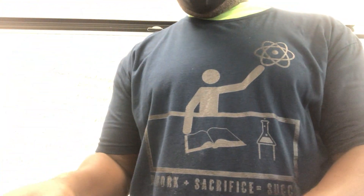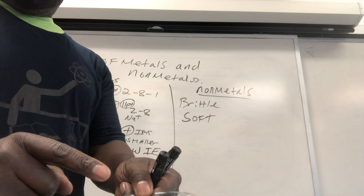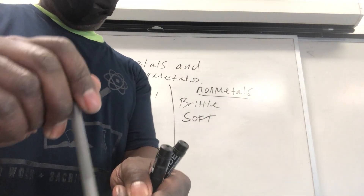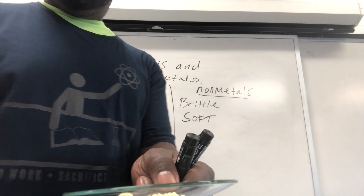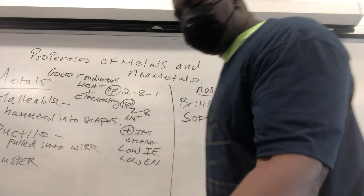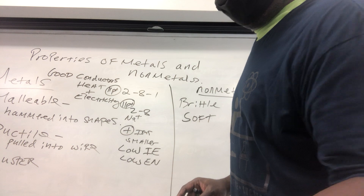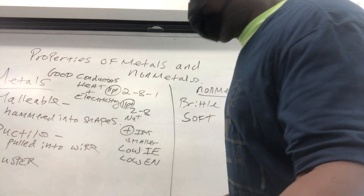I've got some sulfur here. This sulfur — if I take a pen and just poke it, it just crumbles, it just cracks up. So it's soft and powdery — a lot of non-metals are powdery, but not all of them. They're brittle.